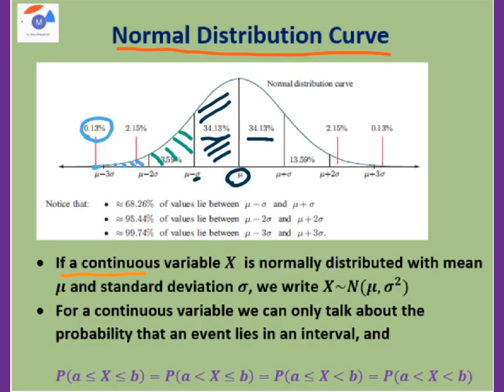If a continuous variable x is normally distributed with mean mu and standard deviation sigma, we write this. Pay attention, for this sigma standard deviation, we do square here. For a continuous variable, we can only talk about the probability that an event lies in an interval.